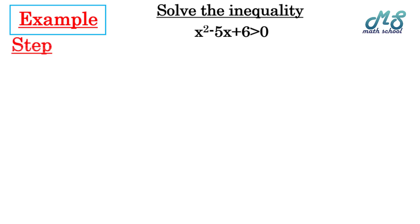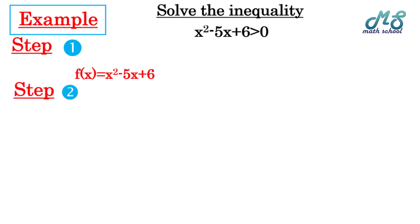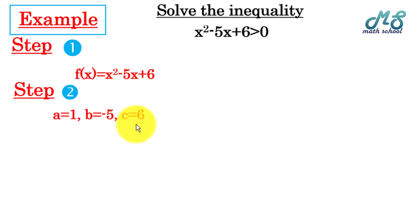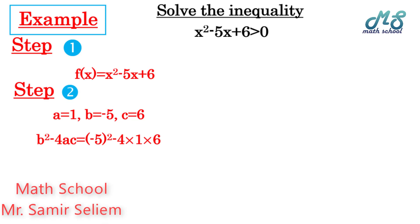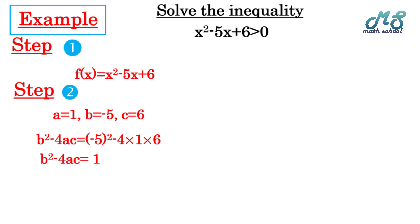Step 1: write the related function f(x) = x² - 5x + 6. Step 2: find the sign of the function. To find the sign of the quadratic function, calculate the discriminant. The coefficients are a = 1, b = -5, c = 6. The discriminant is b² - 4ac = (-5)² - 4(1)(6) = 1, which is positive, so we have two different real roots.